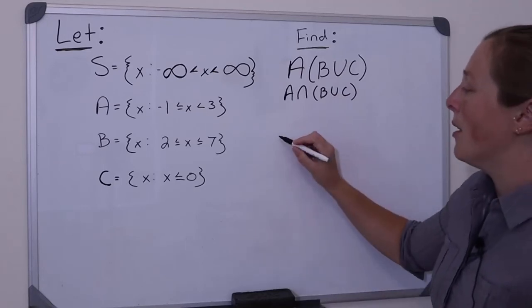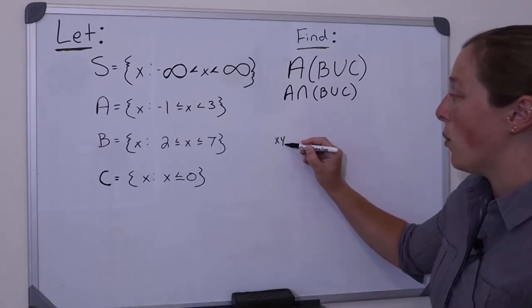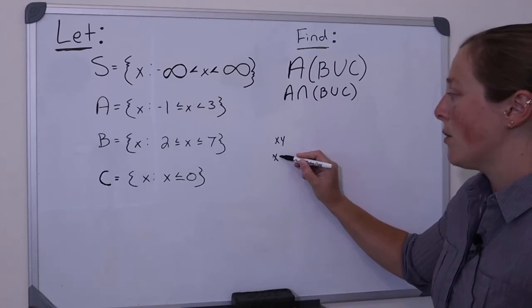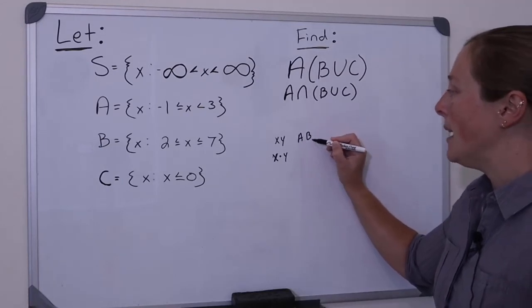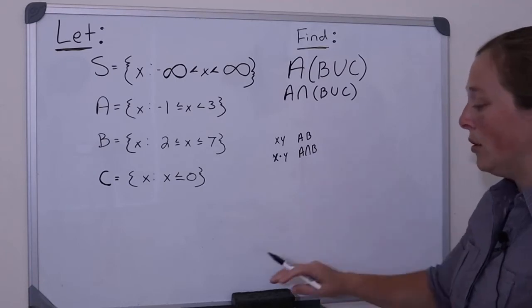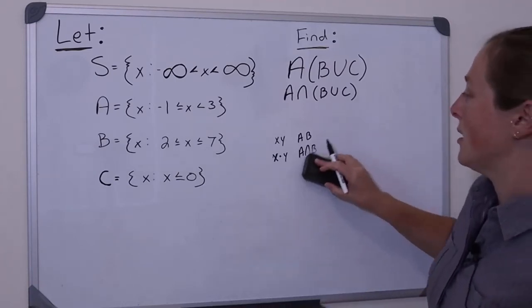So, you know, kind of like how if you have variables, say xy, you could write it xy or you could write x times y, the multiplication sign is assumed to be there. Similarly, when you have events AB, this is A intersection B. You don't need to necessarily write that intersection sign.